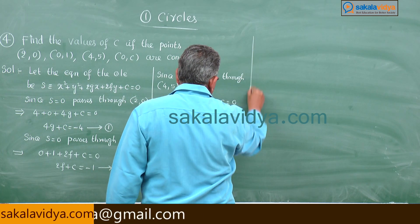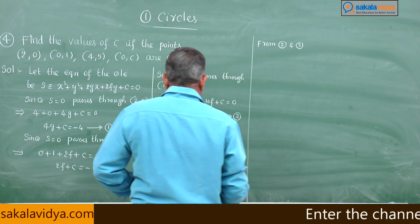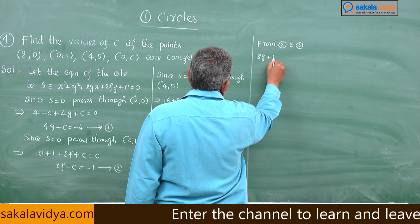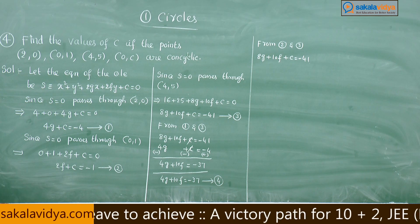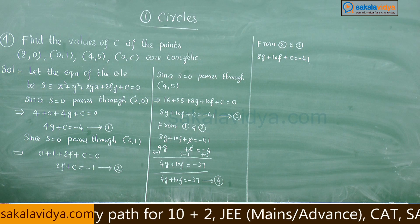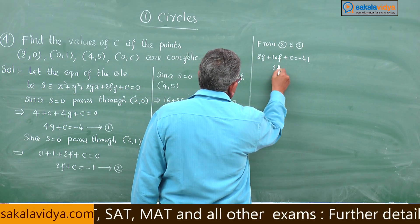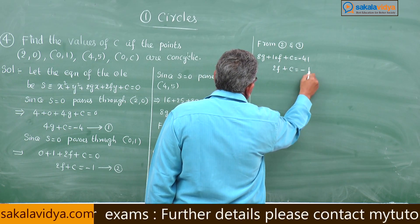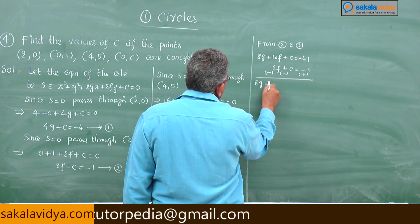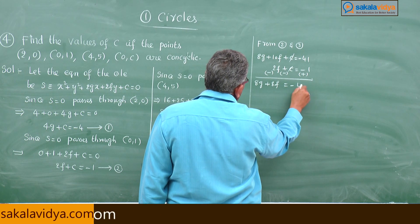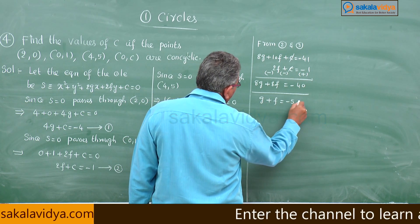From equations 2 and 3: subtracting equation 2 (2f + c = −1) from equation 3 (8g + 10f + c = −41), c cancels and we get 8g + 8f = −40. Dividing by 8 gives g + f = −5. Call this equation 5.